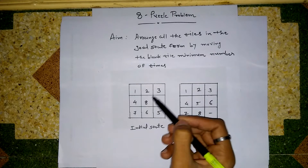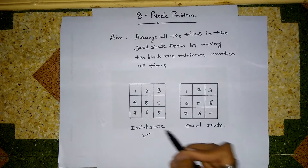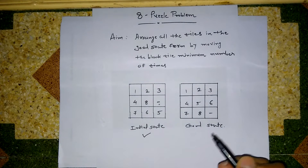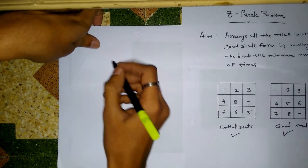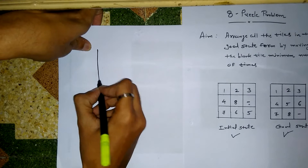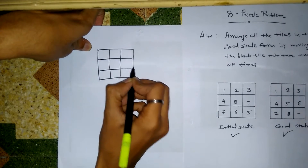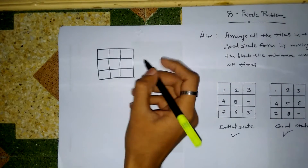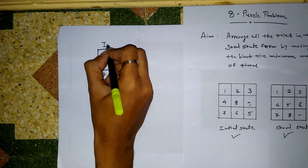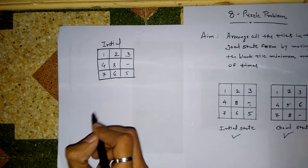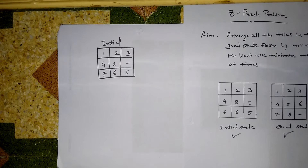This is the initial state and this is the goal state — we have to reach the goal state by moving the blank tile a minimum number of times. So let's start to solve this problem. This is the initial state from where we start, and we have to reach the goal state. We are now moving the blank tile.